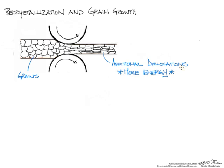Recrystallization is a process that allows us to actually restore our grains to the original state, like we see back here, and it ends up being a lower energy state for the grains.